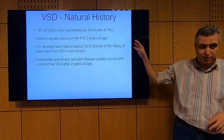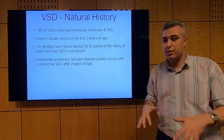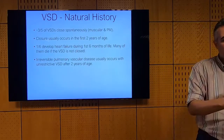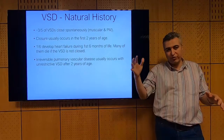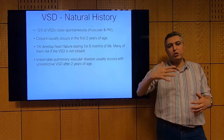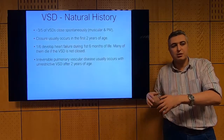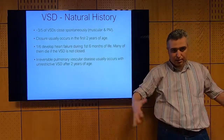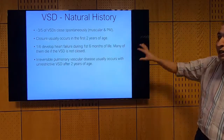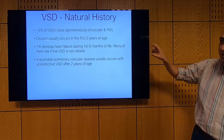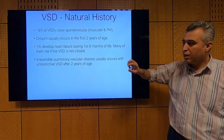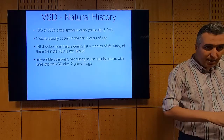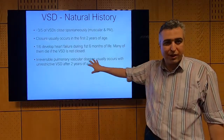If patients survive the early heart failure period, they develop significant increase in pulmonary vascular resistance. Initially reversible, it eventually becomes irreversible — the shunt reverses to right-to-left — which is Eisenmenger syndrome. Irreversible pulmonary vascular disease typically develops in unrestricted VSD after two years of age, though some patients develop it earlier. Down syndrome patients can develop irreversible pulmonary vascular resistance as early as six to nine months of age.